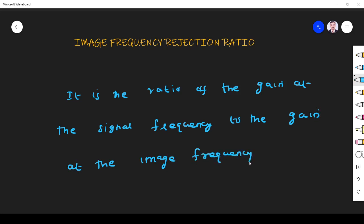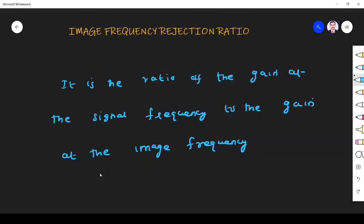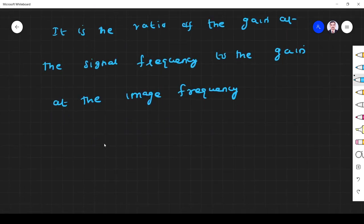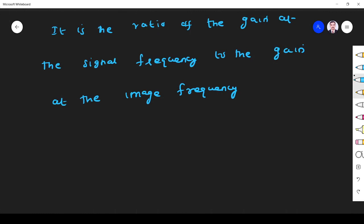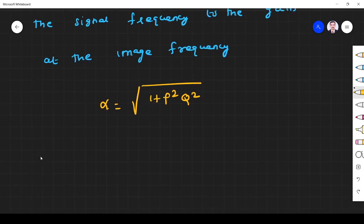That's what we know as image frequency rejection ratio. The formula to find image frequency rejection ratio is given by alpha equals square root of 1 plus rho squared Q squared.